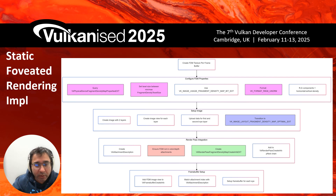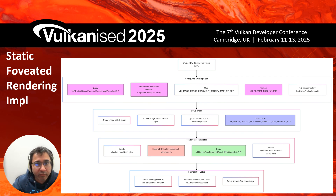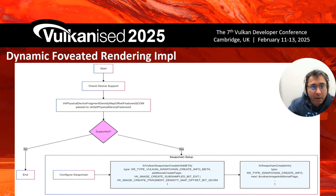However, you have to recompute the fragment density map every frame whenever the user moves, which is very heavy on the CPU — and that essentially kills the whole point of having FDM, because now you've created a CPU bottleneck. This is where dynamic foveated rendering helps.